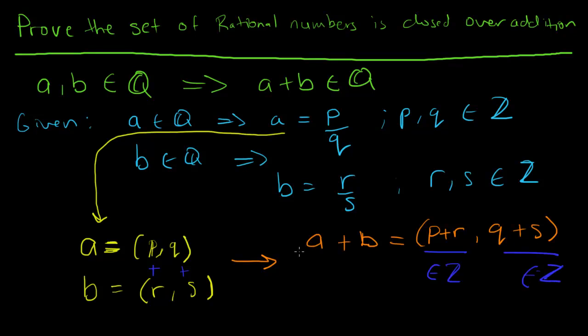That means A plus B can be represented as this ordered pair of integers, which we showed can represent rational numbers. Therefore, A plus B equals (P plus R) over (Q plus S), which means it's an element of the rational numbers.